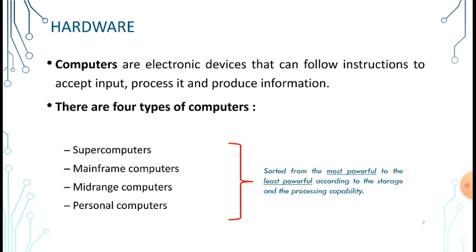We have four types of computers. The only difference between these types is performance — in other words, speed, capacity, and memory. These types are supercomputers, mainframes, mid-range, and personal computers.